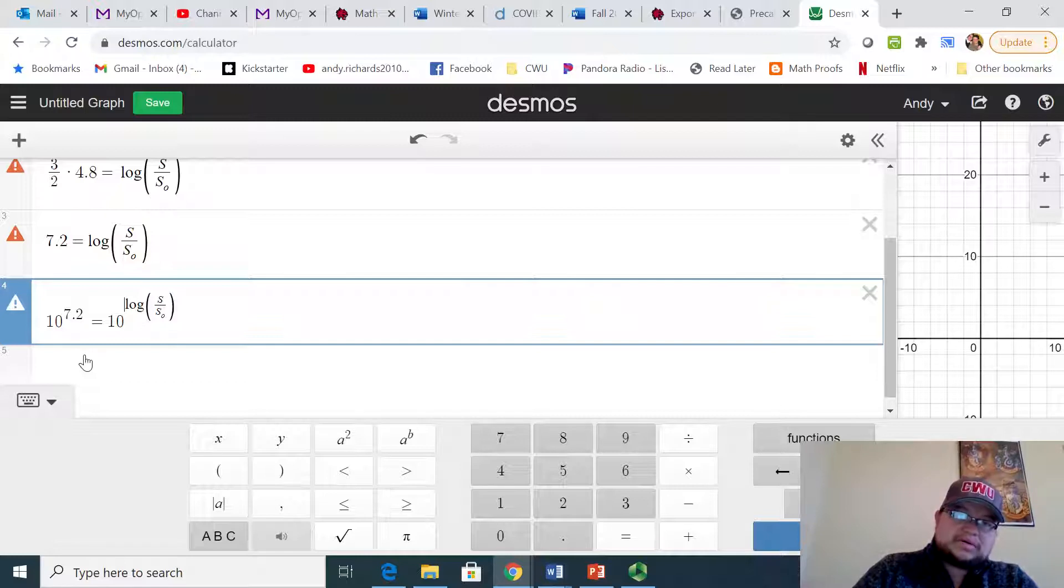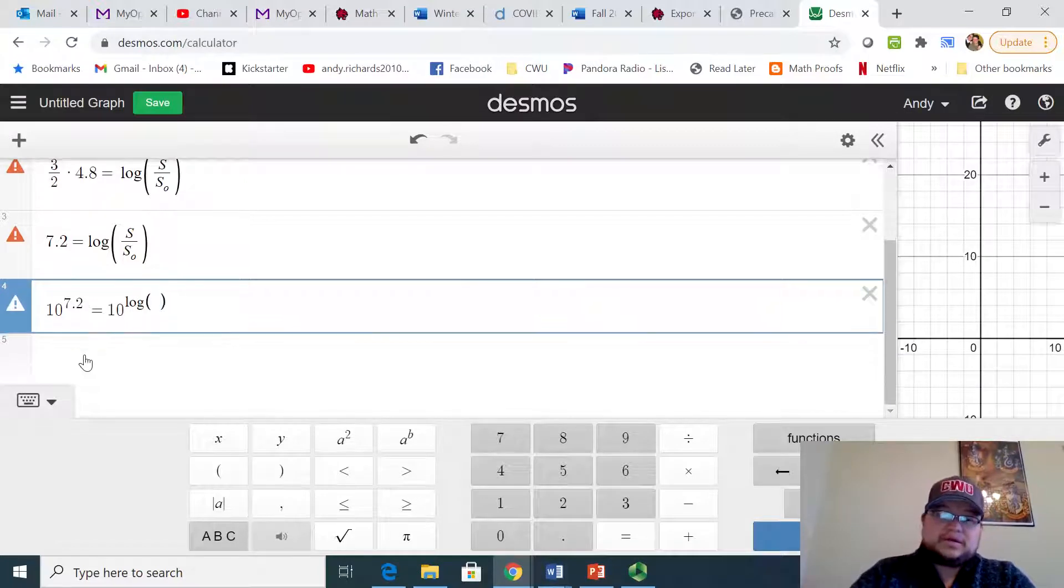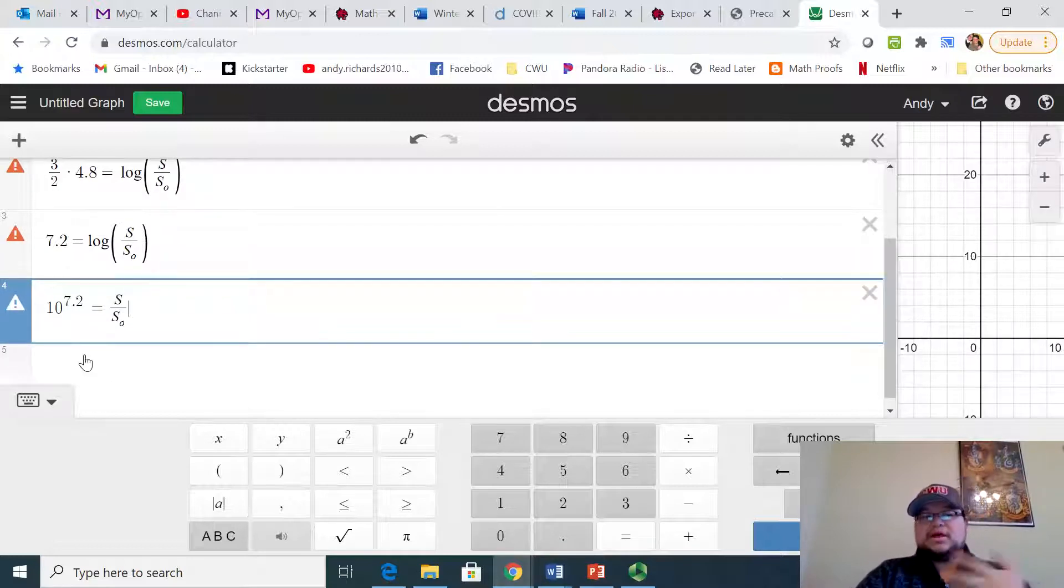But the deal is, the reason why we want to do that is we have a logarithmic property which essentially says that when the base is the same, you can cancel them out. So since we have these logarithms at the same base, that means they'll cancel out and what's left is what's inside that logarithm. So that S over S sub zero here, and then what's left with this is to multiply now that S sub zero.